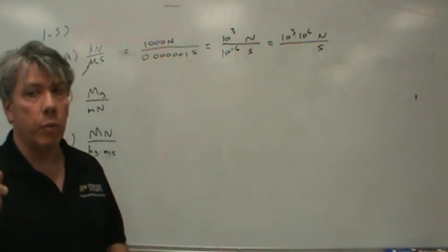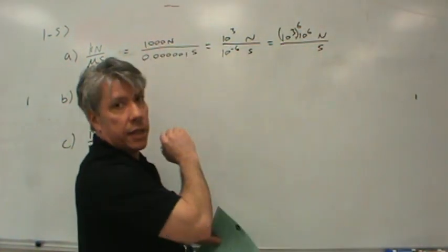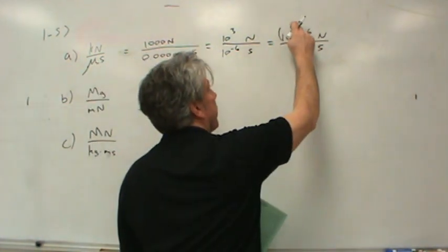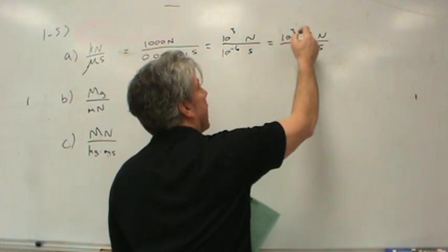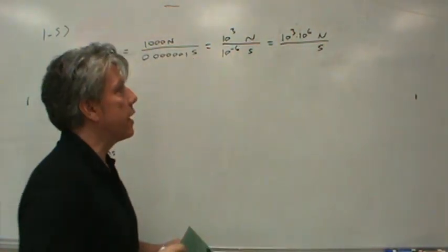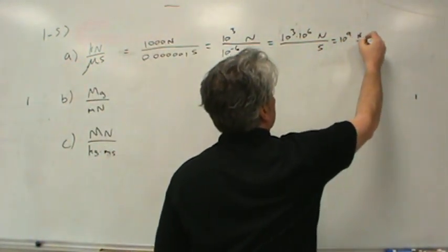Add the exponents. You do not multiply them. When would we multiply the exponents? When they are to the power of themselves. If it was like that, then we would multiply three by six, but that's not the way it is. So we need to add three plus six. Well, that's easy. That's nine. So this is ten to the ninth newtons per second.